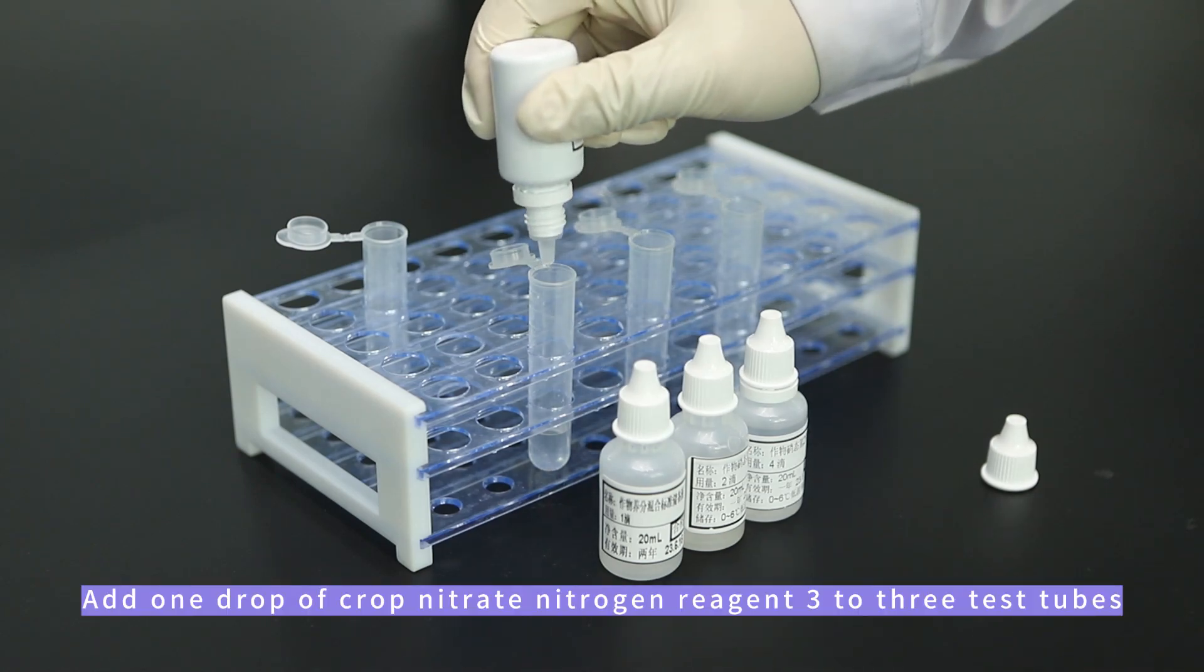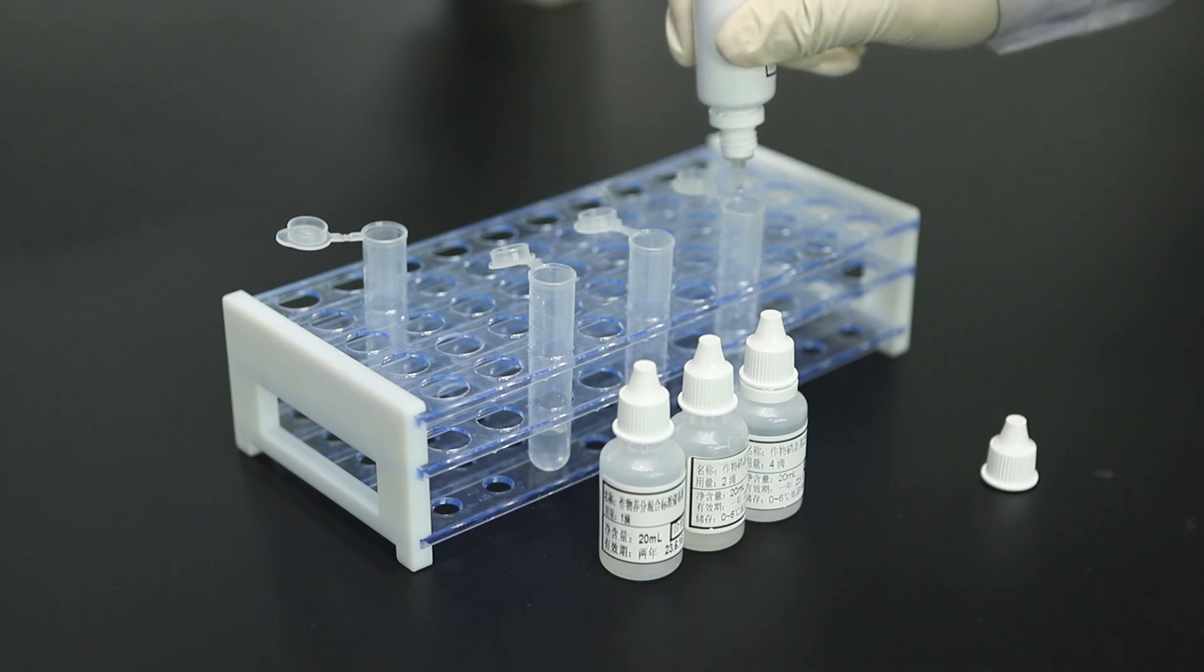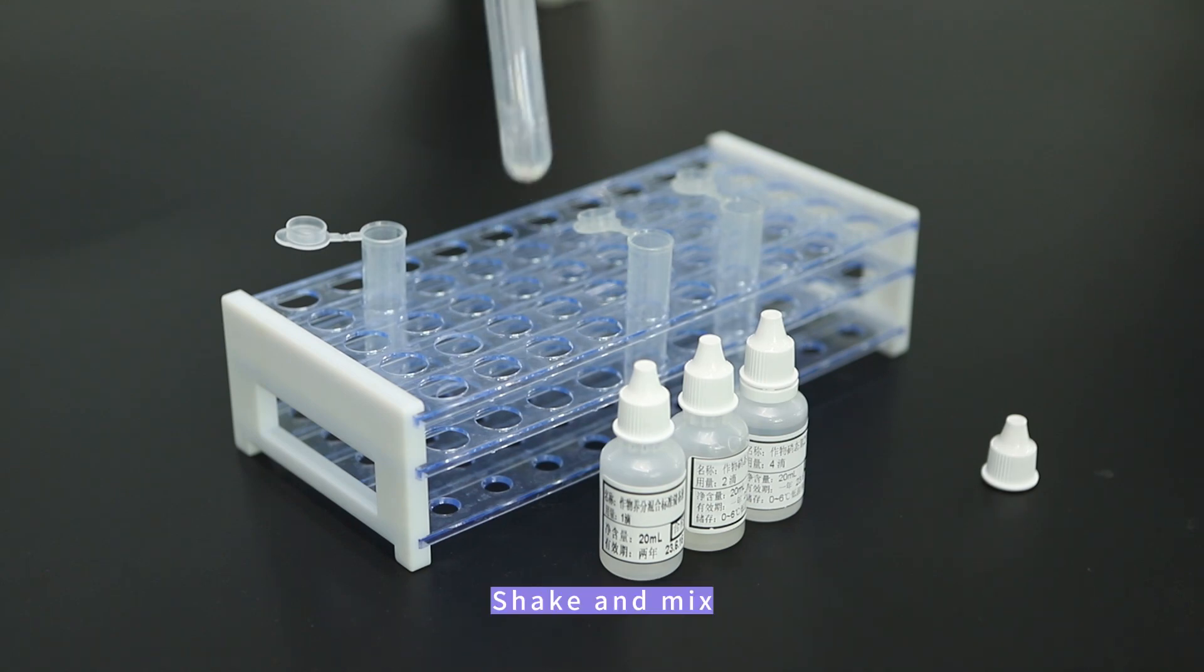Add 1 drop of crop nitrate nitrogen number 2 reagent to 3 test tubes, then shake and mix.